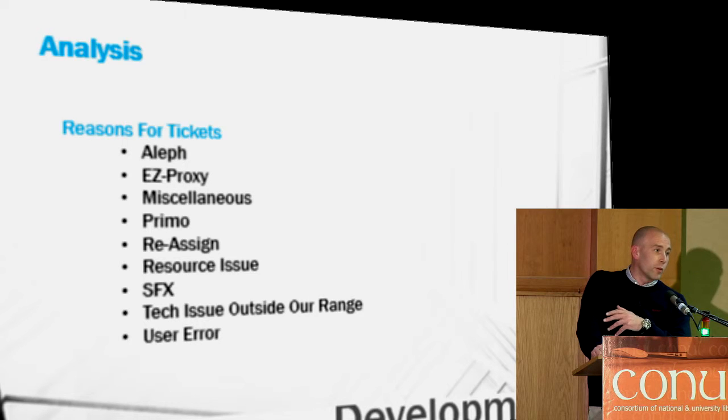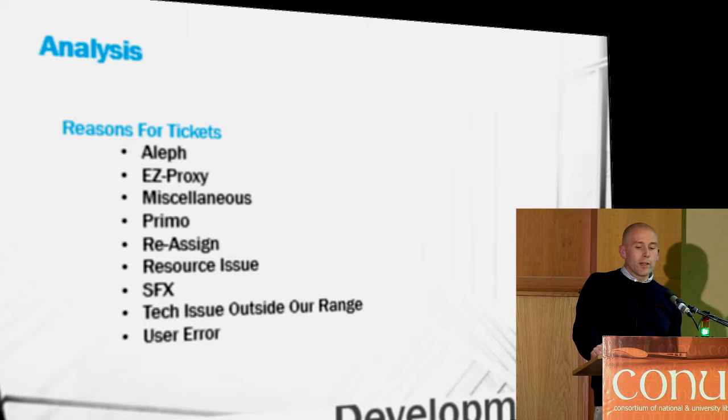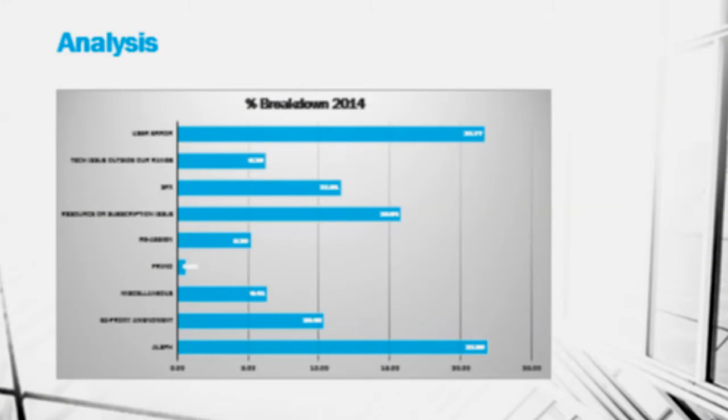Technical issues outside our range happen occasionally — an example would be somebody wasn't able to access full text of a resource because their antivirus software was blocking the access. And then the last category is user error, where all the information in our holdings and records is correct, but the user still assumes they're looking for something we clearly don't have — for example, looking for 1975 access to a journal that we only have access to from 1995. Taking a look at those nine categories and how they broke down for 2014, the results were somewhat surprising. Resources subscription issues came in third place — a lot of those came directly off the back of Swets going under, and the administration problems with our subscriptions off the back of that. Aleph had a fair few problems — it's a drop from the previous year, but that is really good fuel for us, because now we've started this drive to make sure the holdings records in Aleph are accurate. We've started journal holdings update projects to try and bring that number down.